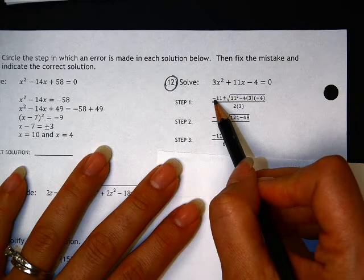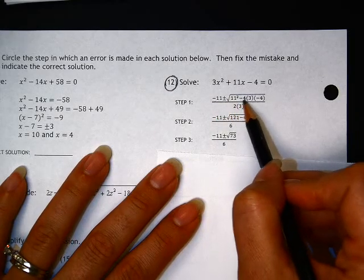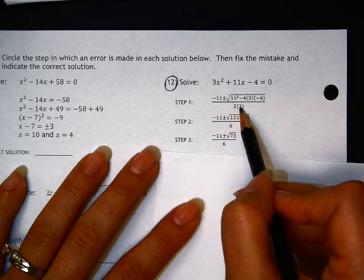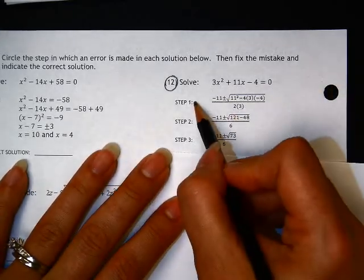This is supposed to be negative b. That looks good. b squared minus 4ac all over 2a. So that step one looks just fine.